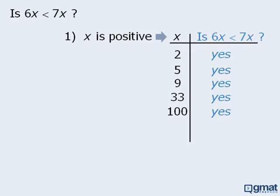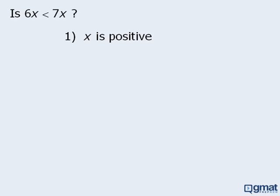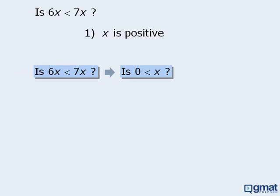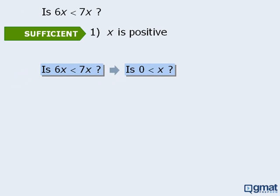In this particular example, the best strategy would be to first rephrase the target question. If we take the target question and subtract 6x from both sides, we get a new target question: is 0 less than x? Statement 1 tells us that x is positive, so statement 1 must be sufficient.